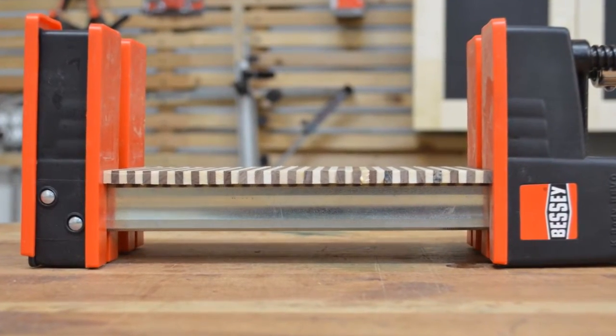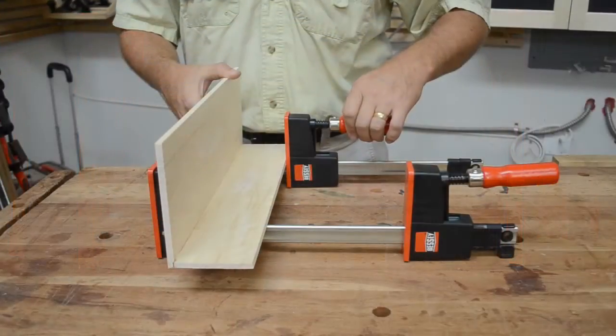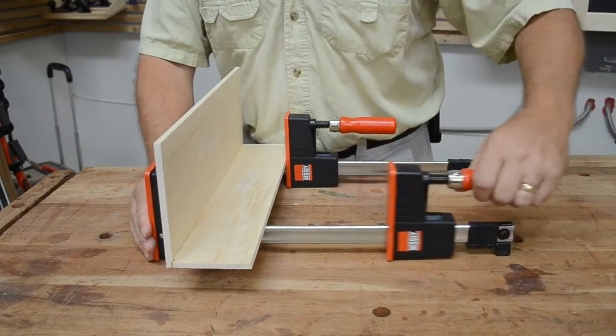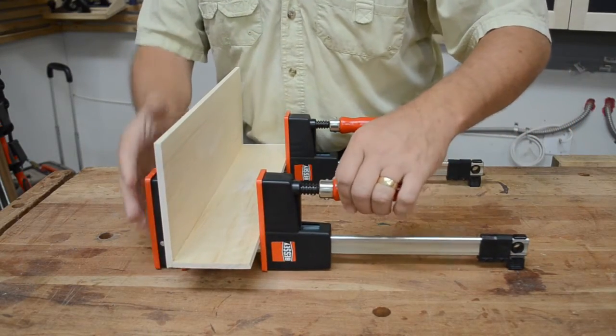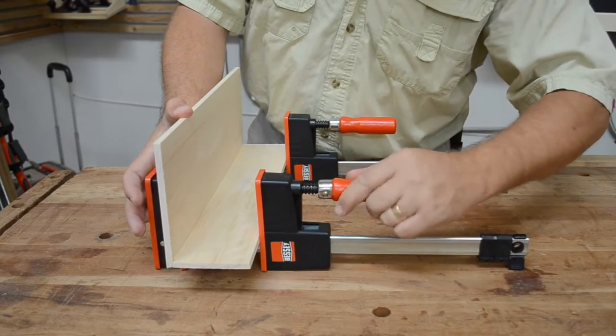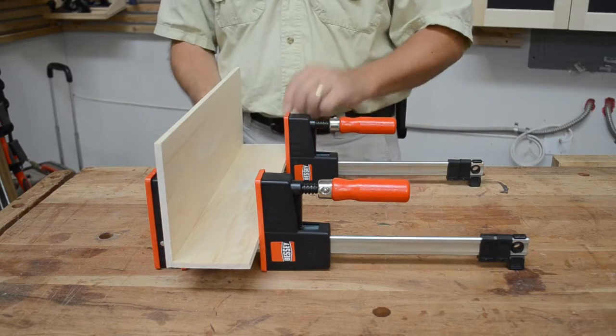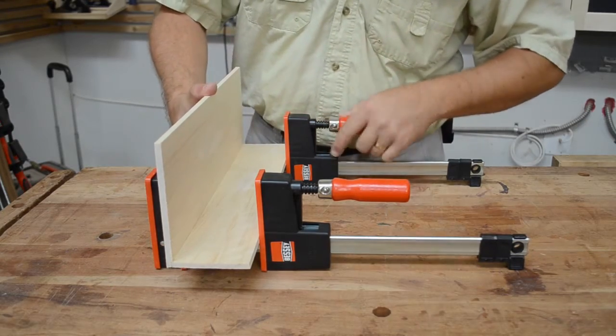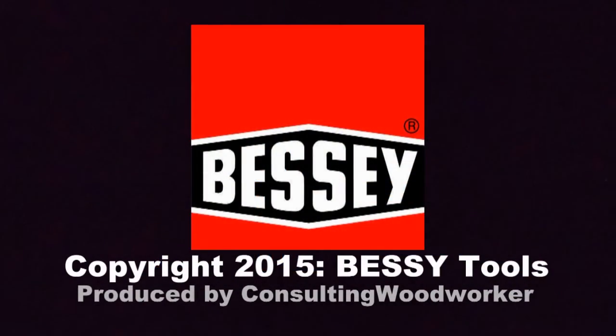So when you need to apply the right amount of clamping force, exactly where you need it, on an assembly that may not allow larger clamps, the Revo Junior parallel jaw clamps are the right sized tool to get the job done.